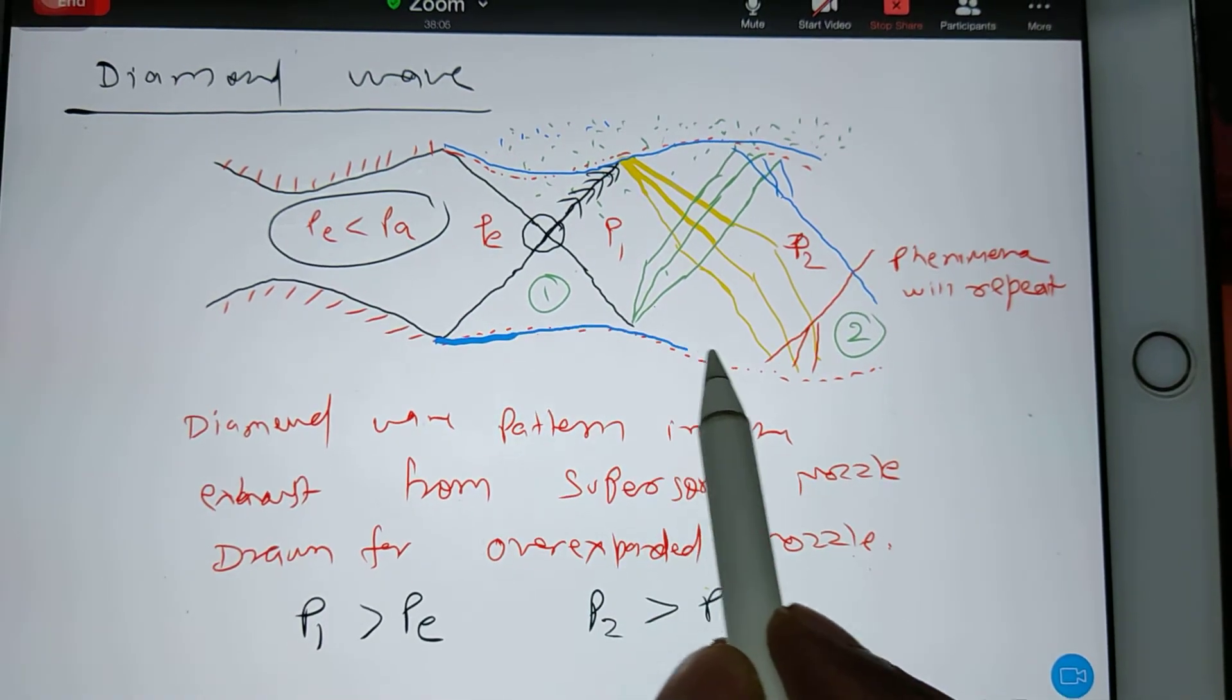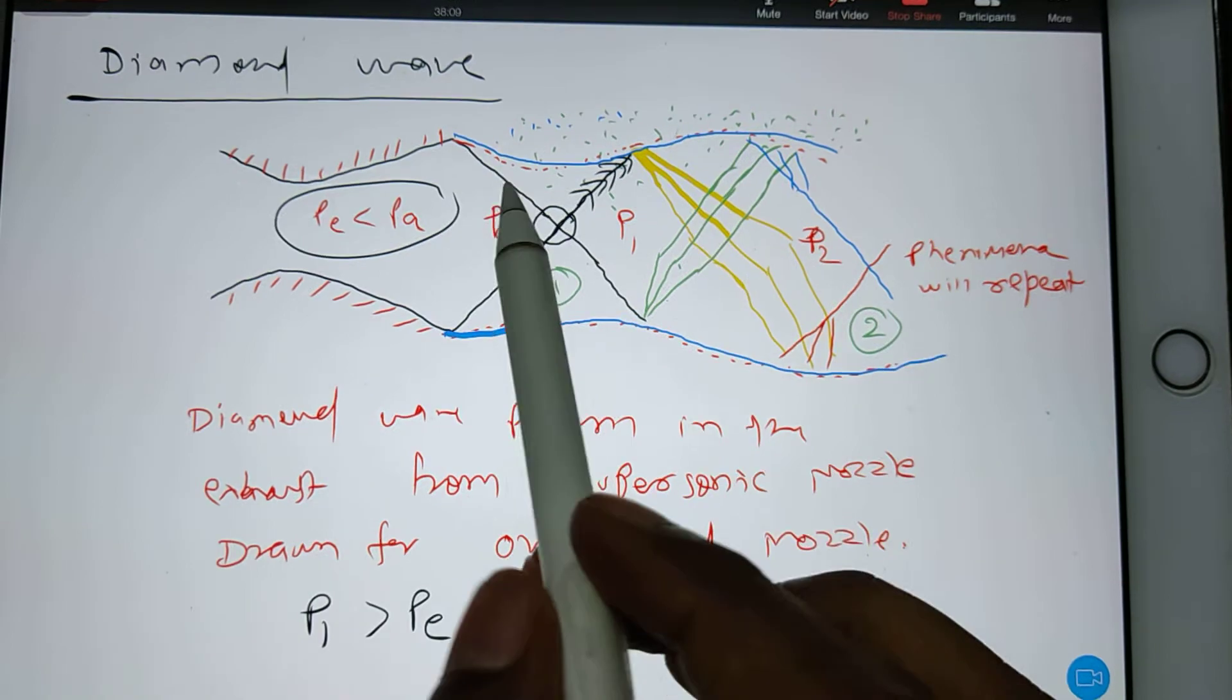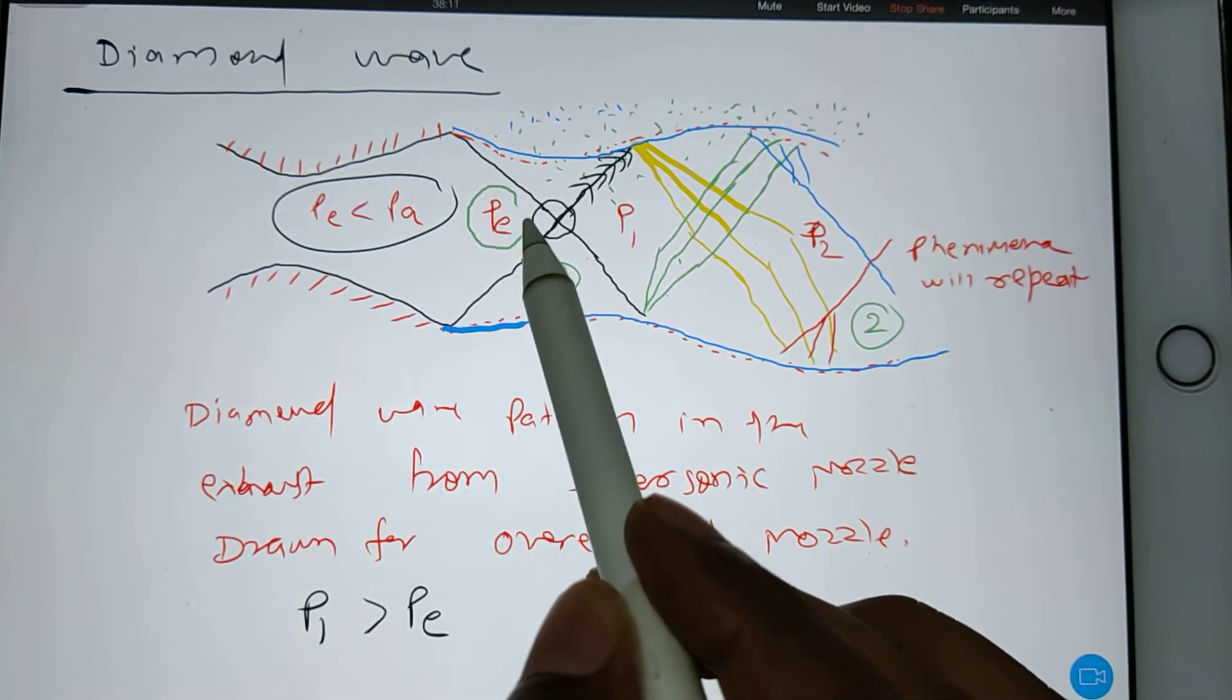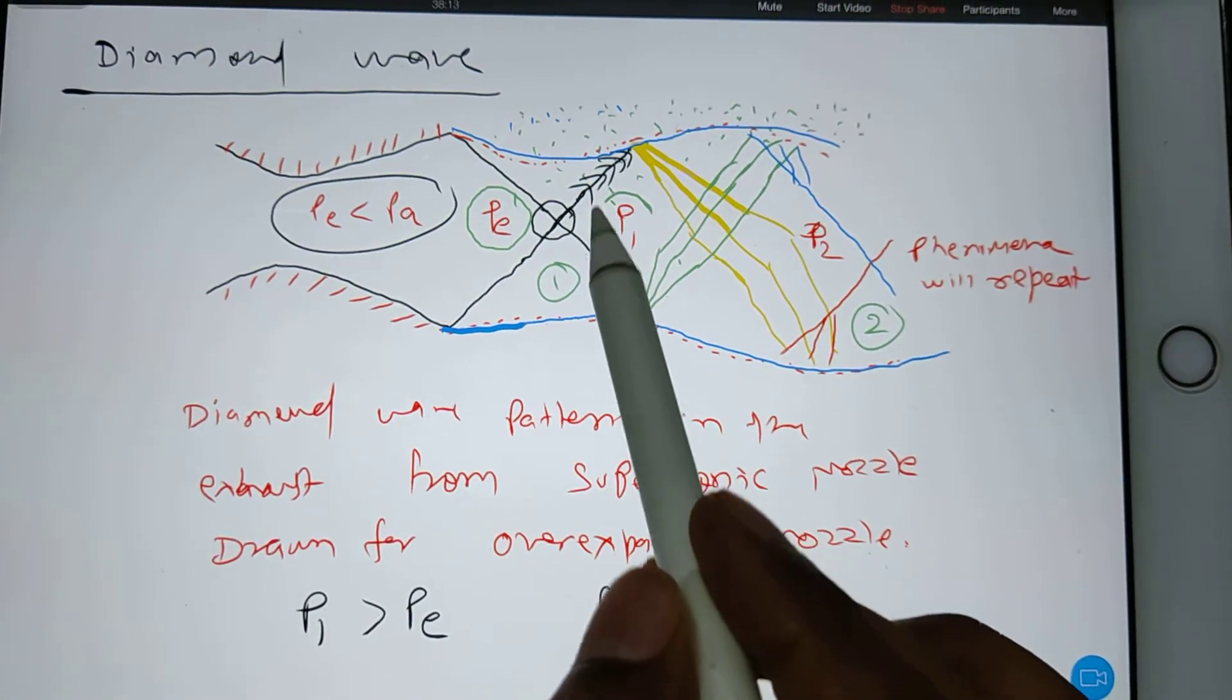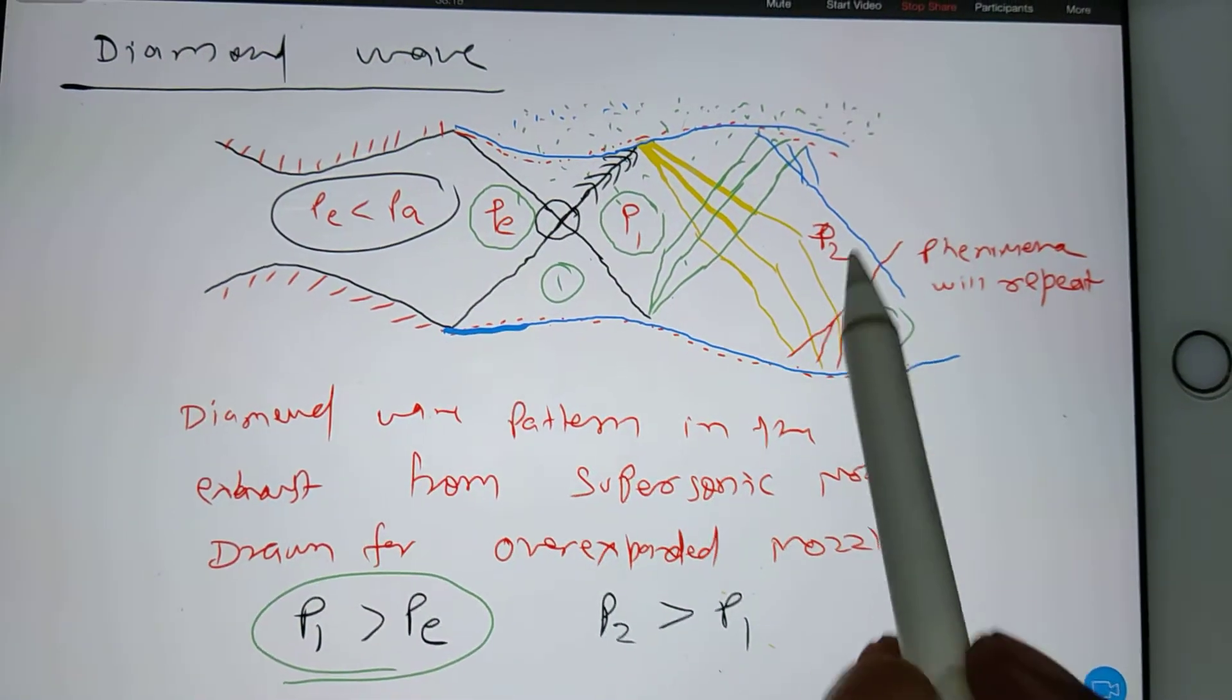And you understand the pattern like this already. I have given you theory about the reflection. So this pressure will increase and become P1 because across the oblique shockwave pressure increases. That's why I have given here.